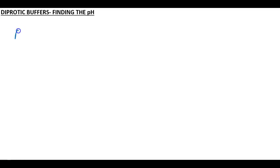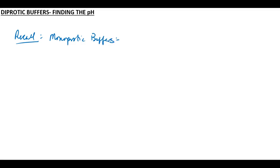Hi everyone. We're going to find the pH of diprotic buffers in this video. But let's recall that for monoprotic buffers, we use the Henderson-Hasselbalch equation: pH equals pKa plus the log of A minus over HA.